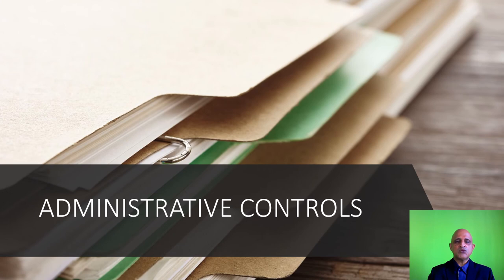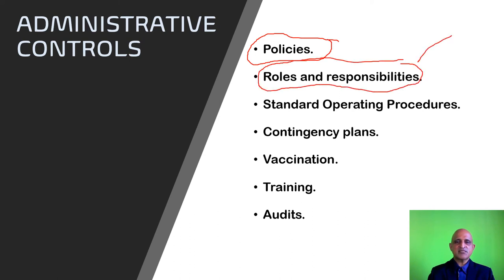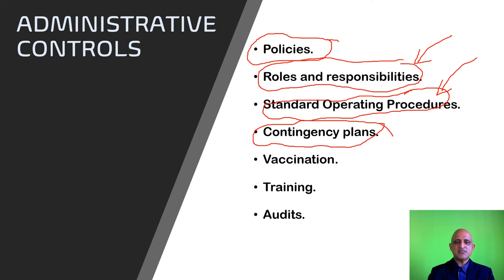We now move on to administrative controls. Administrative controls comprise the policies as well as the laboratory biorisk management system. These include policies, roles and responsibilities as defined in the laboratory biorisk management manual, standard operating procedures, contingency plans which address emergencies, and vaccination of personnel.